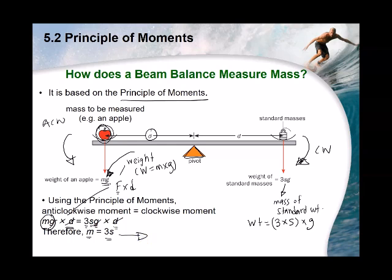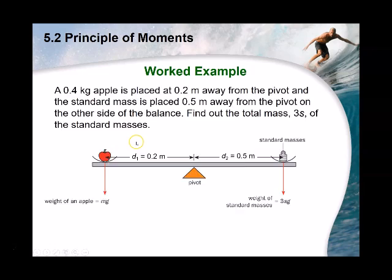This is why a beam balance measures mass rather than weight. Even on the moon, where gravitational field strength differs, g cancels from both sides of the equation, so the mass still equals the mass of the standard weights. This is why a spring balance is not appropriate for measuring mass.